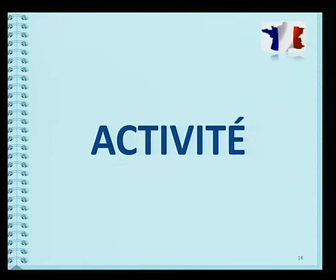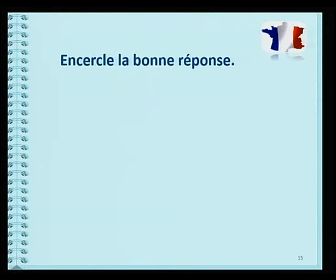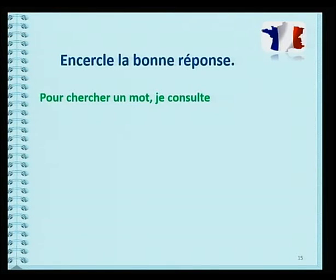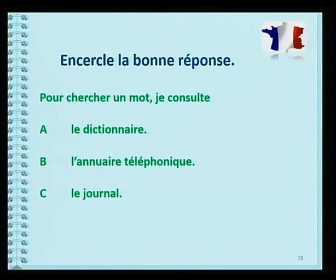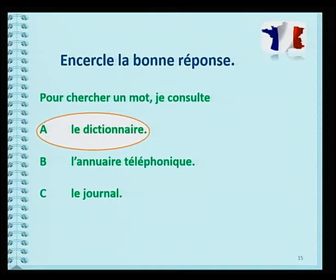Passons à un petit exercice. Question 1. Encercle la bonne réponse. Pour chercher un mot, je consulte: Option A, le dictionnaire. Option B, l'annuaire téléphonique. Option C, le journal. Exact. Tu utilises un dictionnaire. La bonne réponse, c'est l'option A.